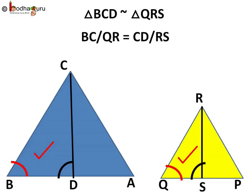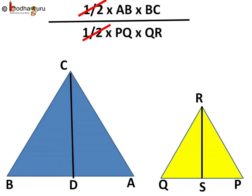We can replace CD by BC into CD by QR into RS. So the ratio of area of two triangles comes to be half into AB into BC by half into PQ into QR.